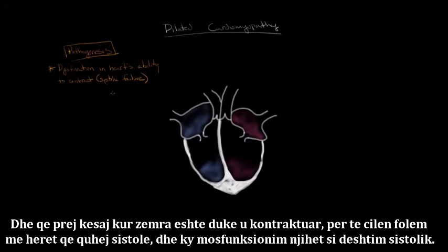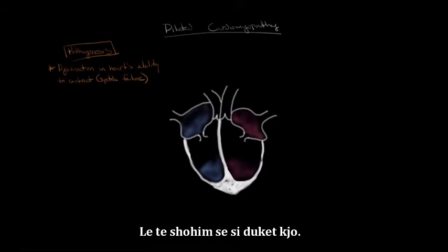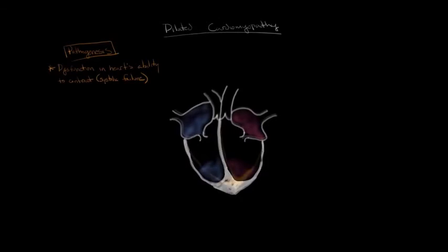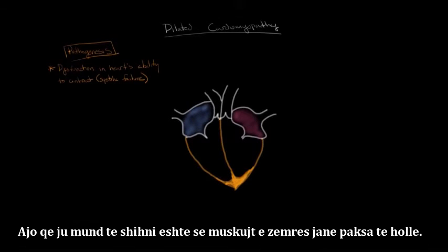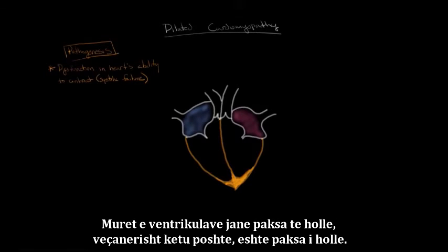Let's see what this looks like. Adjusting the drawing of the heart here, you can see the heart muscle is kind of thin. The walls of the ventricles have gotten a little bit thinner, especially at the bottom — this demonstrates that the muscle isn't able to contract as well.